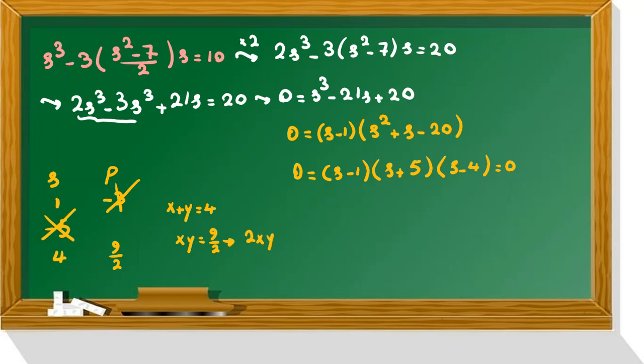So we can say 2xy equal to 9 if you multiply by 2. y is 4 minus x. Now here, if you replace y with 4 minus x, it will be 9.